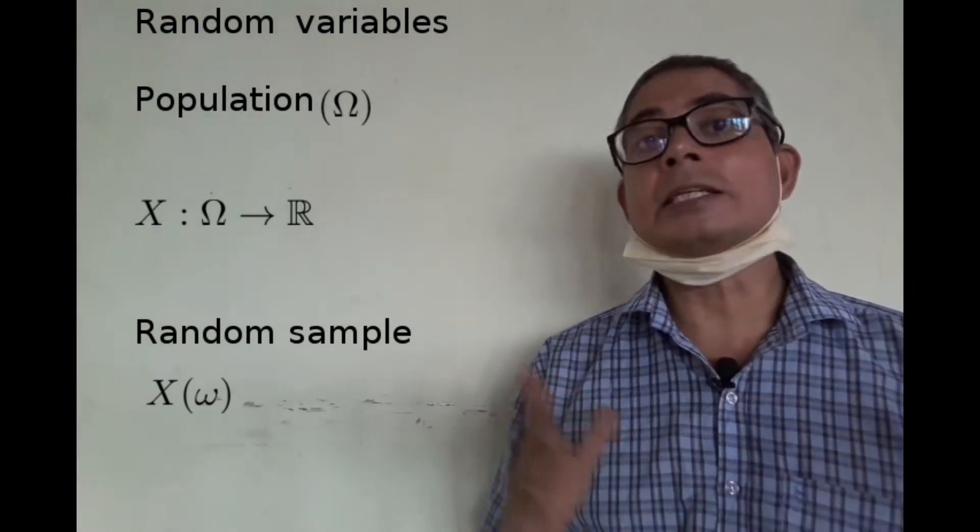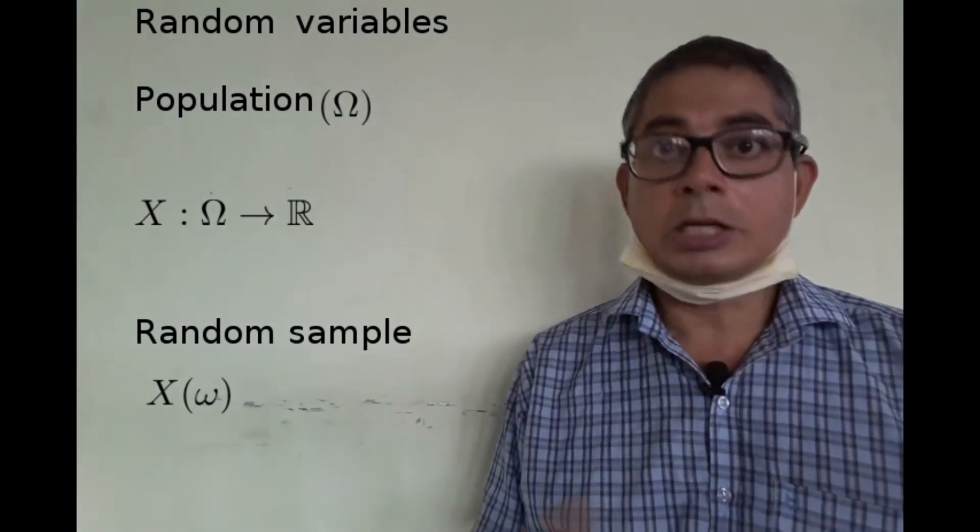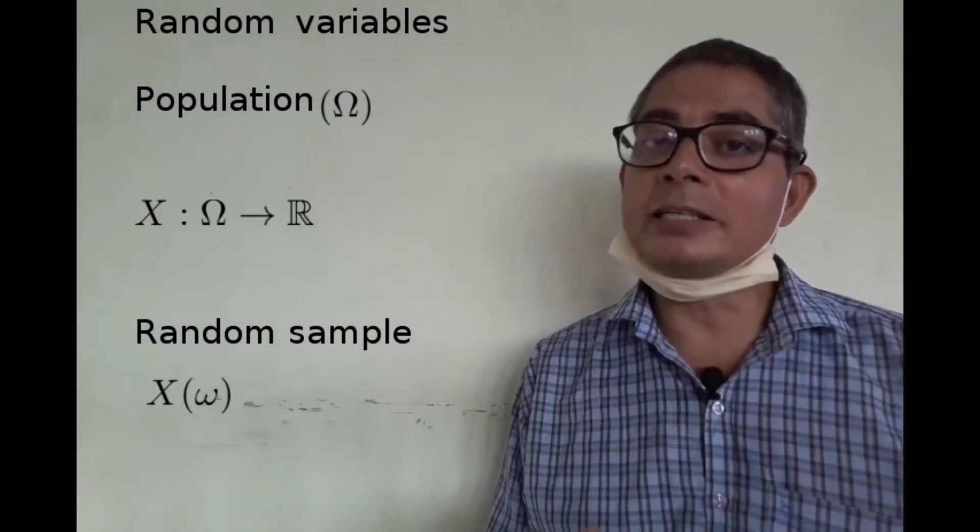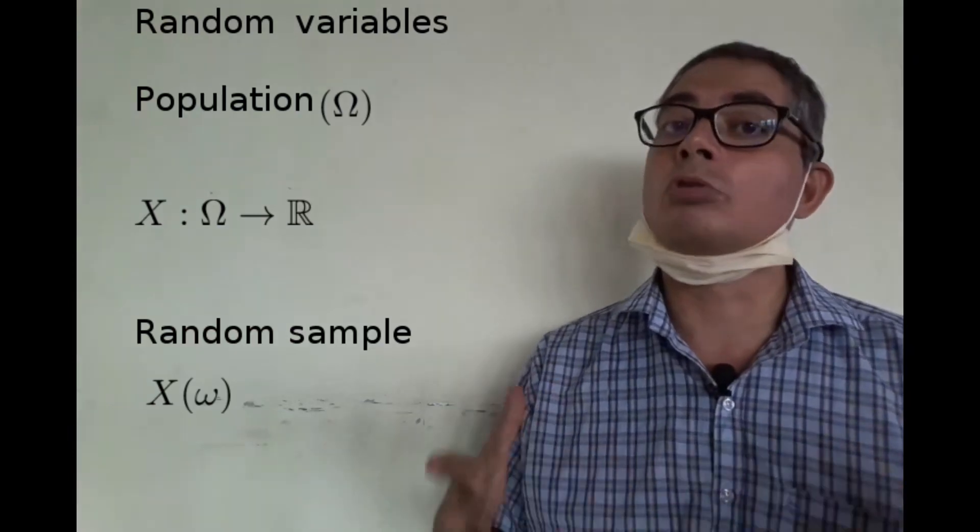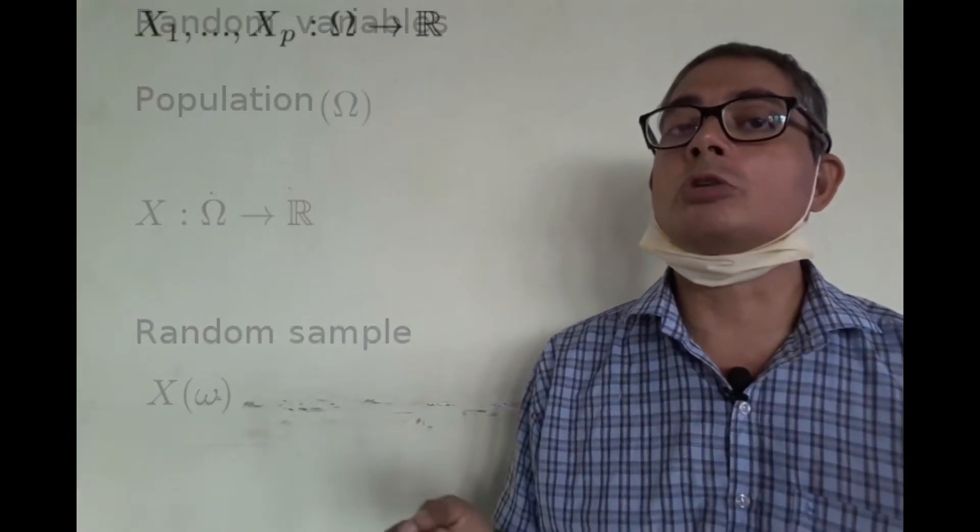Well, that's precisely what happens for both univariate and multivariate statistics. The only difference is that in multivariate statistics, there are more than one function. So we have x1 to xp.